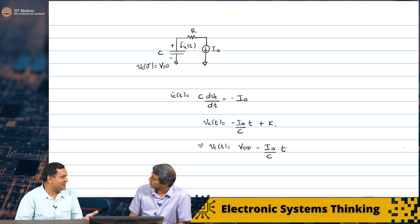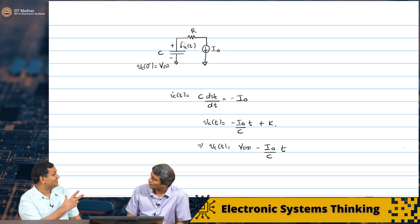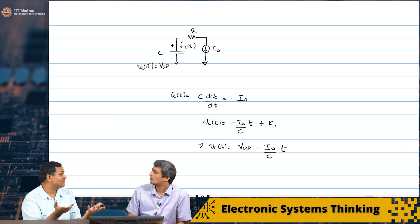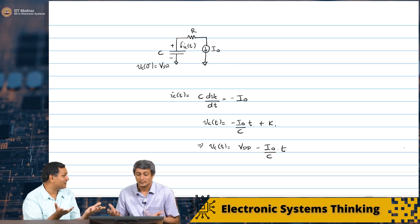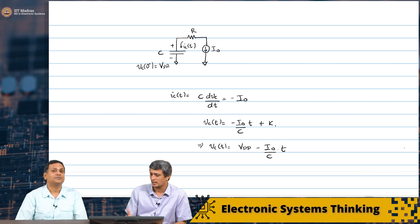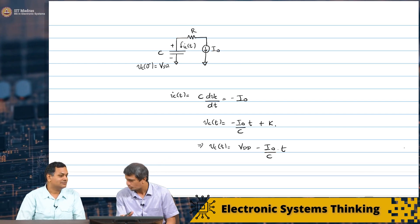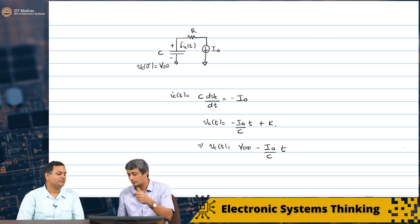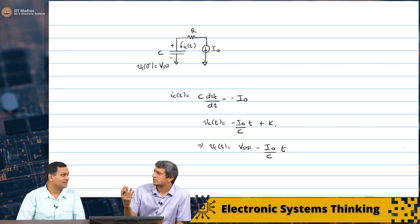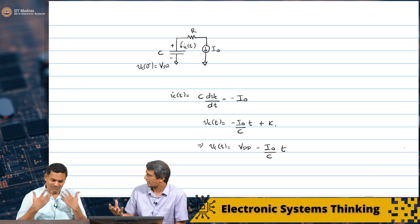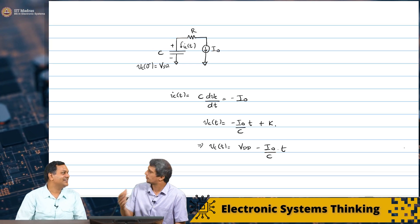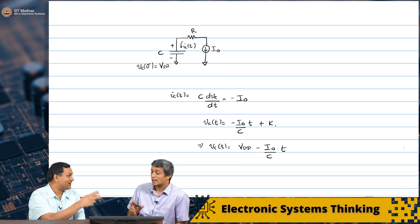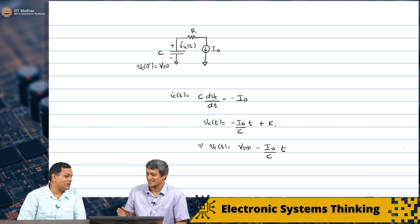If you have a resistance in series it does not matter. This is something fundamental in circuit theory: any component in series with the current source does not change the rest of the network — it does not change the behavior. The slope has not changed. Nor have the energy considerations. The current source provides I₀, so I₀²R is being dissipated in the resistor, meaning extra energy comes from the current source, but the energy going into the capacitor is not changing — it is the same, because the voltage and currents are the same.